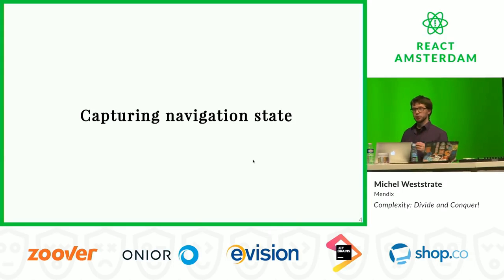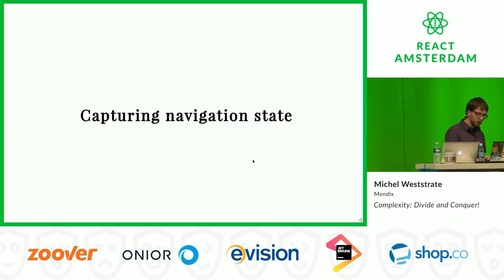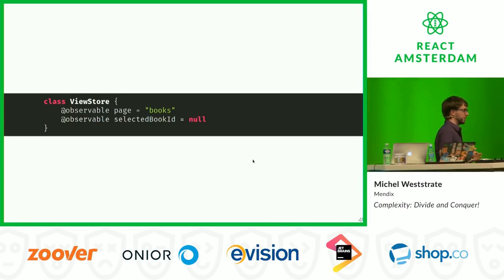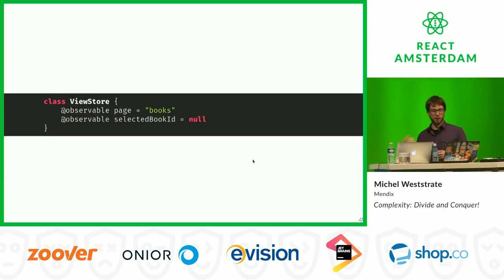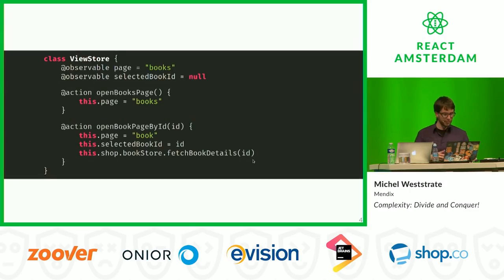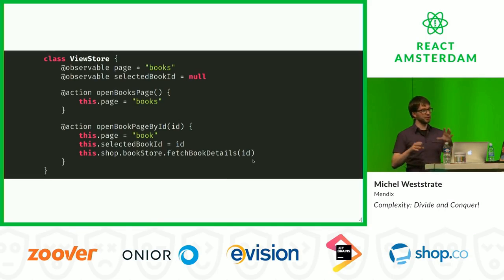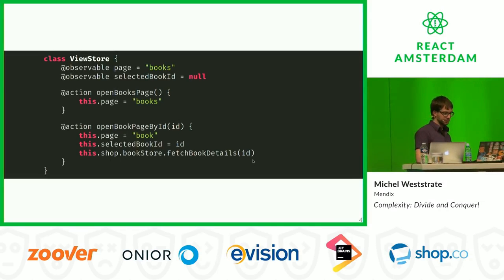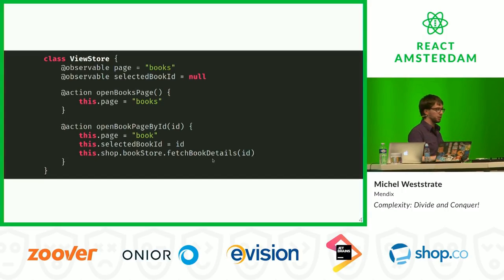For that, you need to capture your navigation state - store in your state what view the user is currently on. That's pretty straightforward: a simple enumeration expressing which page the user is on, plus parameters of that view. Then we can introduce functions that transition the state from one page to another. And here we can also start fetching data - so the state transition from one page to another is entirely in our store and logic, not in our view.